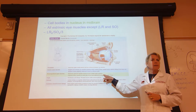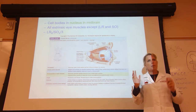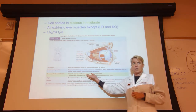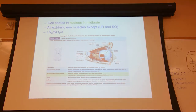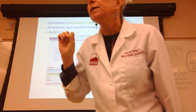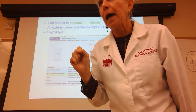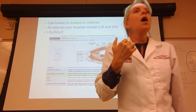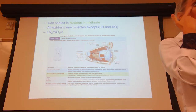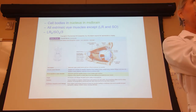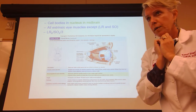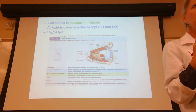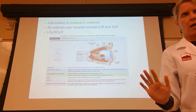Cranial nerve III also has a parasympathetic visceral motor component — it targets the smooth muscle in the iris of your eye and causes pupillary constriction. You have no conscious control over that. You cannot voluntarily constrict your pupil. Cranial nerve III is part of the pathway for that involuntary response. We will spend considerable time on the autonomic nervous system — today is just an introduction.